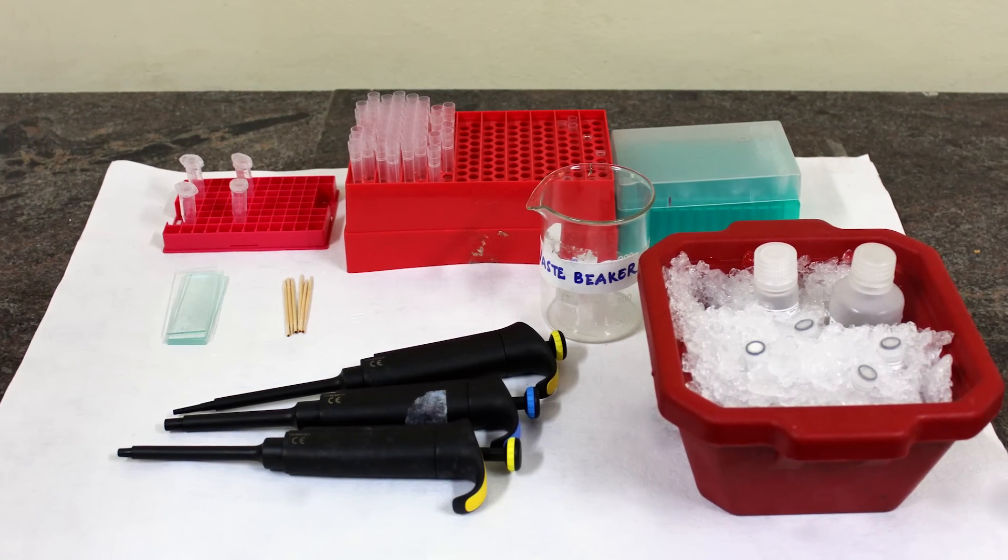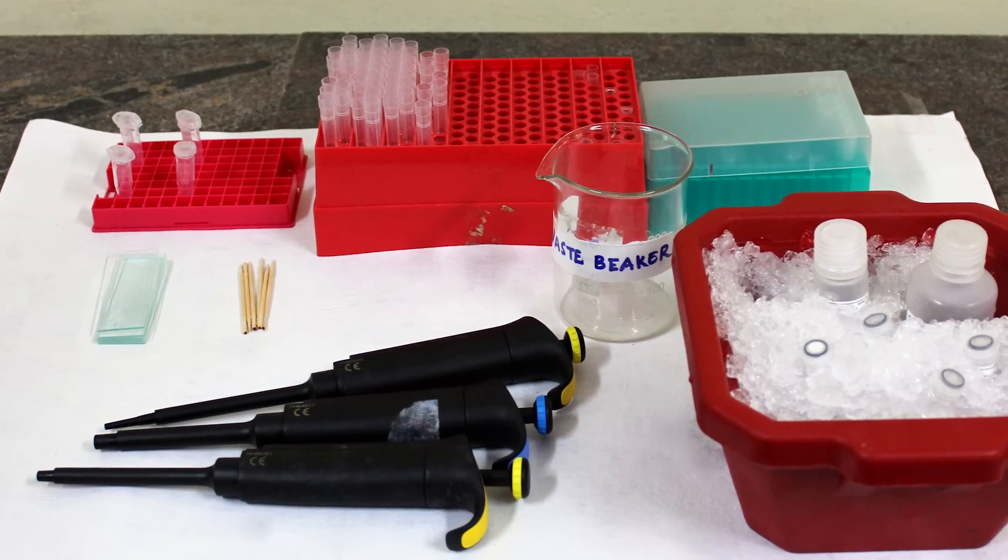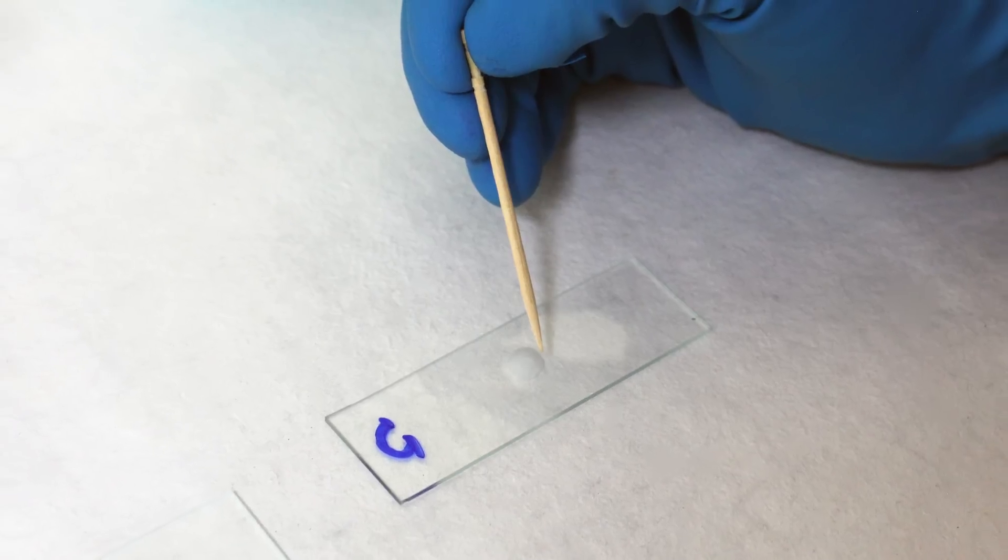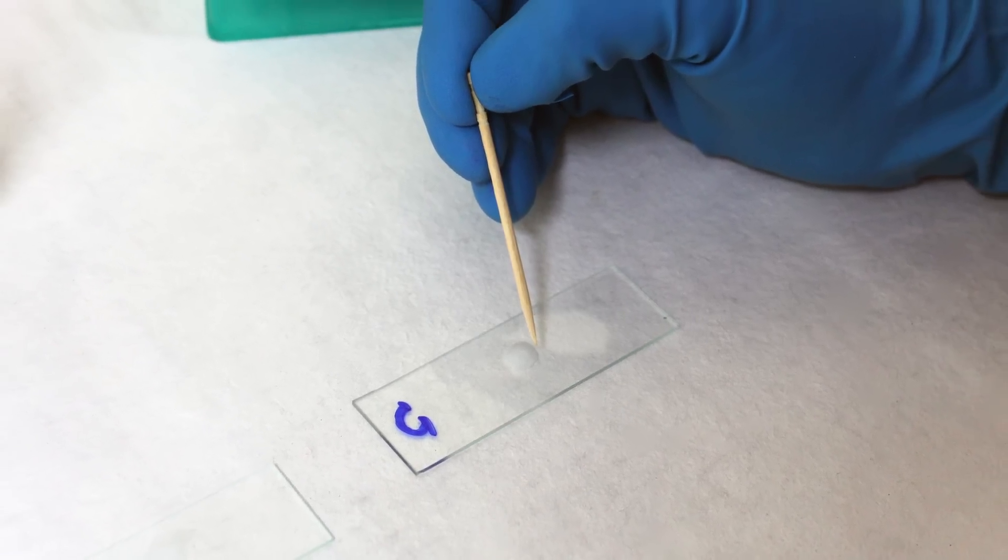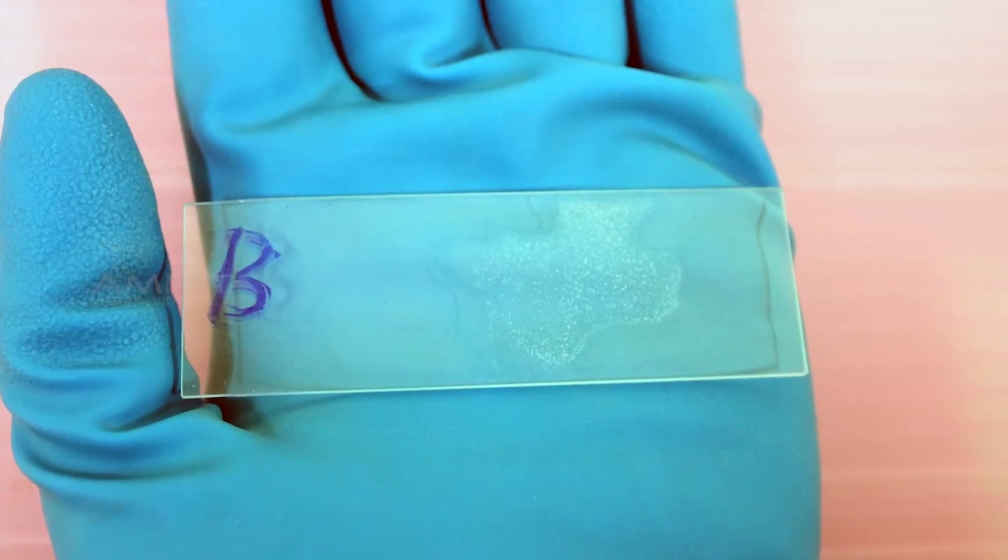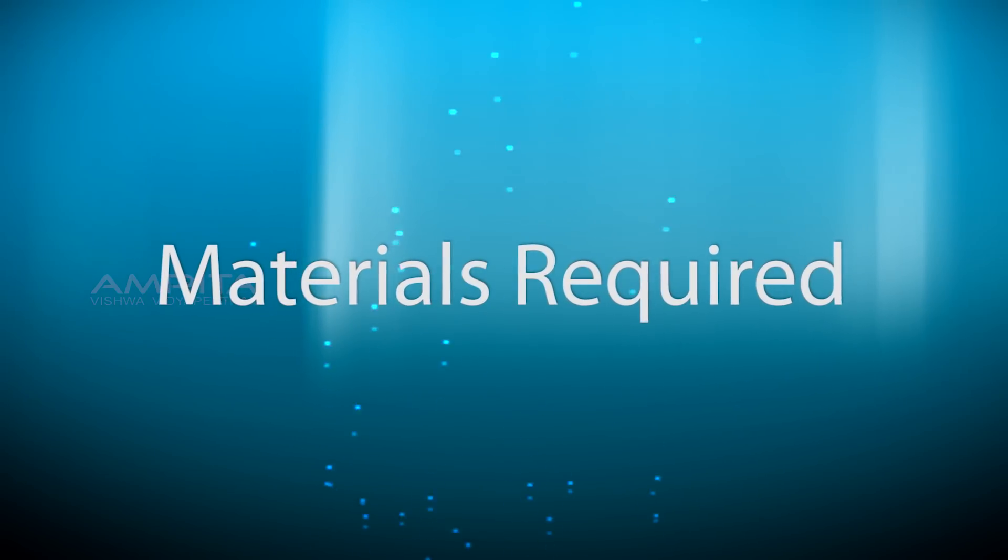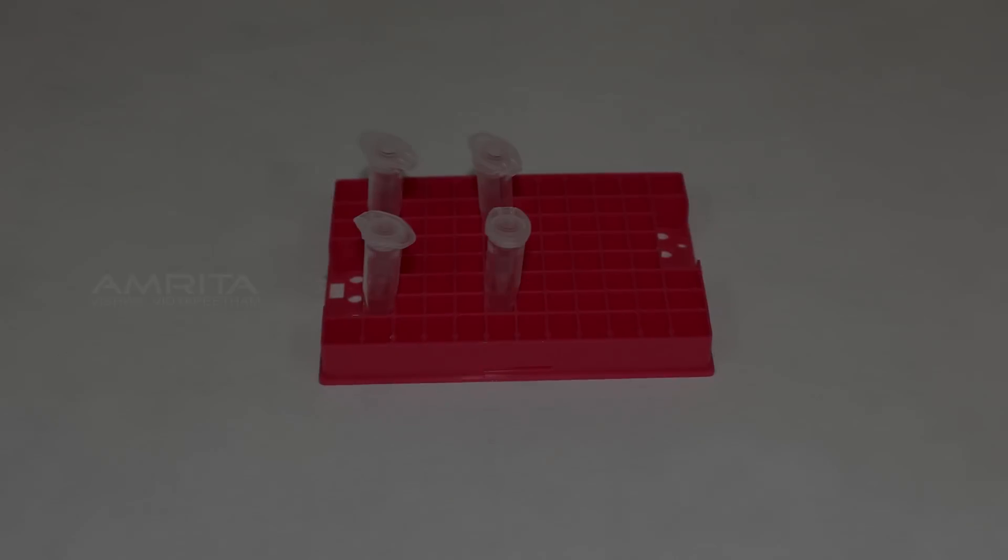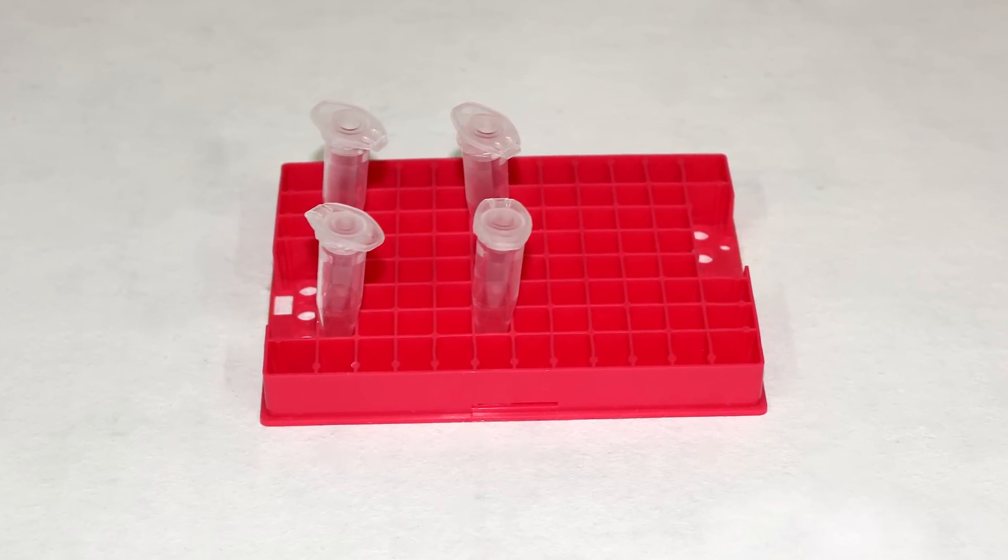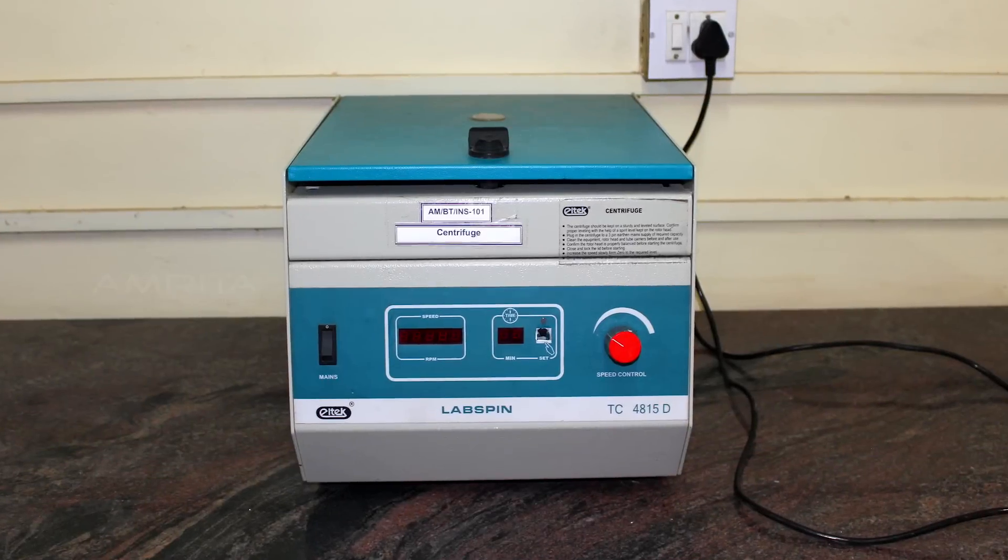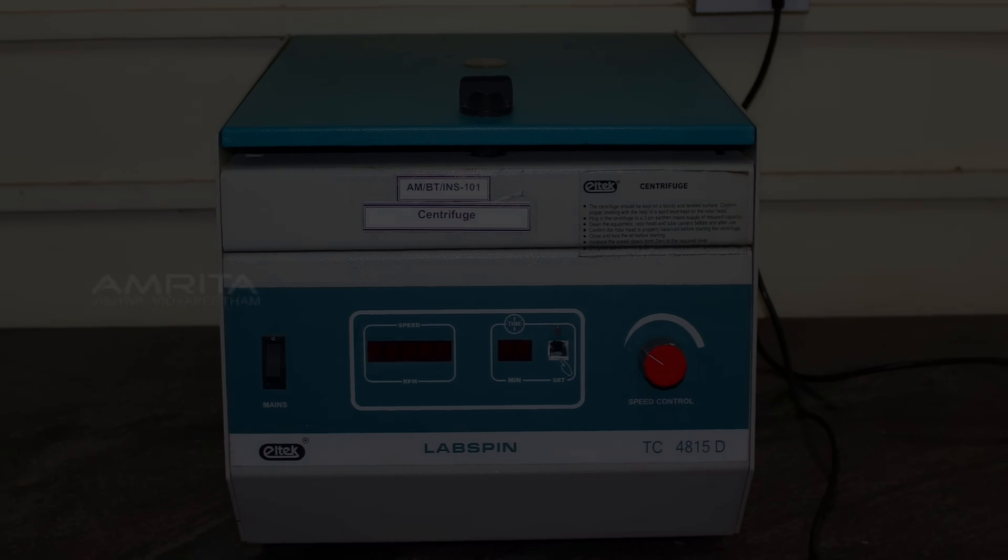In the latex agglutination test, the sample to be tested is sent to the lab where it is mixed with latex beads coated with a specific antigen or antibody. Materials required: 1.5 ml microcentrifuge tubes, centrifuge, pipette...